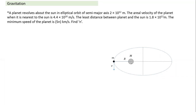If I understand in terms of a figure, what are things given here? The semi-major axis — this distance is given. The area velocity is given. When it is nearest to the sun, this distance is given, and area velocity is given. Area velocity means one-half times velocity times distance is given. So indirectly, the velocity is also given.